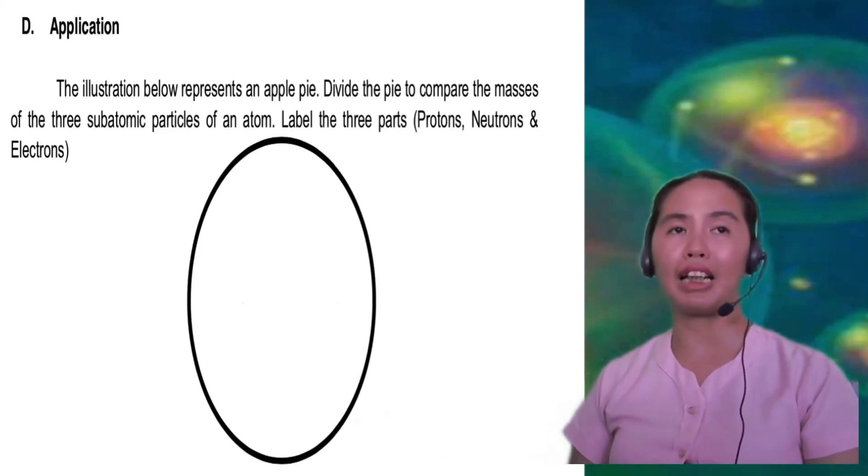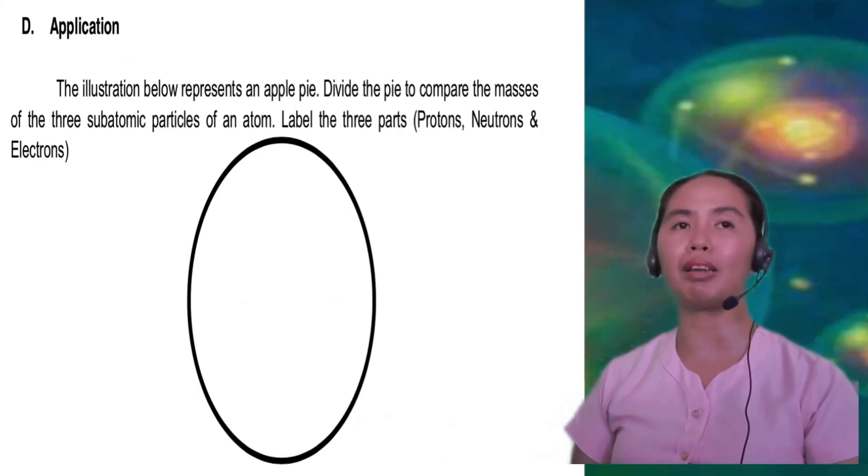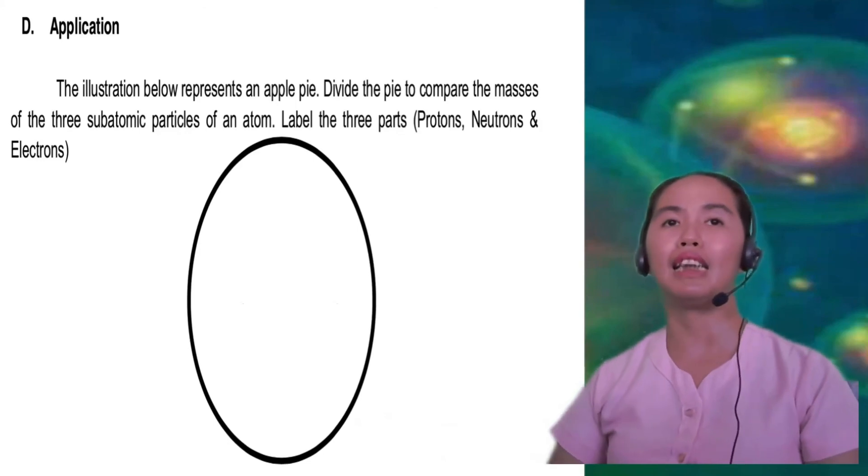For letter D, application. The illustration below represents an apple pie. Divide the pie to compare the masses of the three subatomic particles of an atom. Label the three parts: protons, neutrons, and electrons.